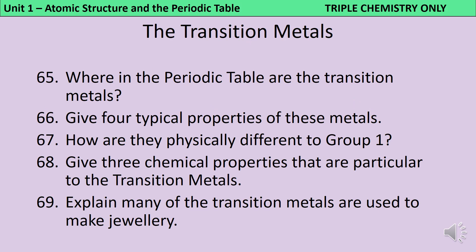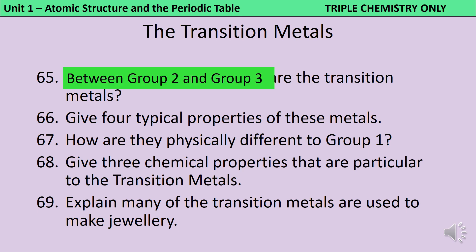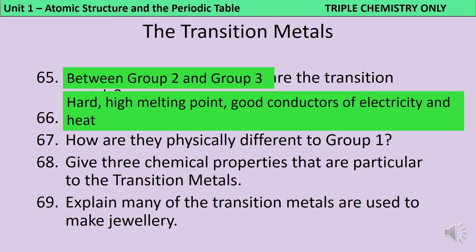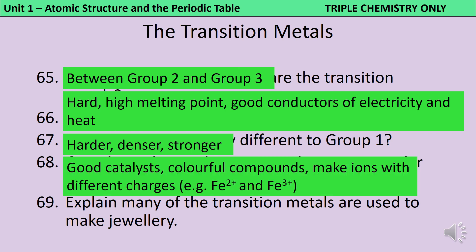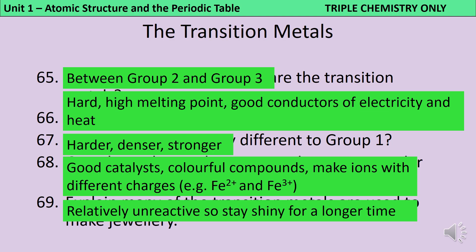If you're sitting the GCSE chemistry papers — the triple science papers — you need to know about the transition metals, which are found between Group 2 and Group 3 of the periodic table. These metals are typically hard, have high melting points, and are good conductors of electricity and heat. They're also harder, denser and stronger than the Group 1 metals. Interestingly, the transition metals are good catalysts, they form colourful compounds, and they make ions with different charges — for instance, iron can produce Fe²⁺ and Fe³⁺ ions. The transition metals are used to make jewellery because they're relatively unreactive and therefore remain shiny for a long time.